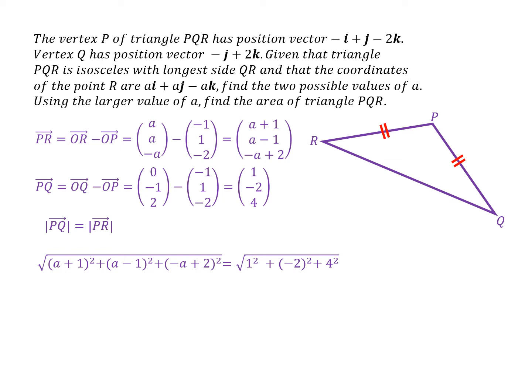I'm also then going to multiply the brackets out. So when I multiply out A plus one squared, I get A squared, two A and one. A minus one squared gives me A squared minus two A plus one. And minus A plus two squared gives me A squared minus four A plus four. And that's equal to four squared, two squared and one squared, 21.